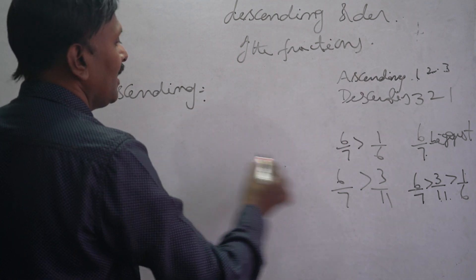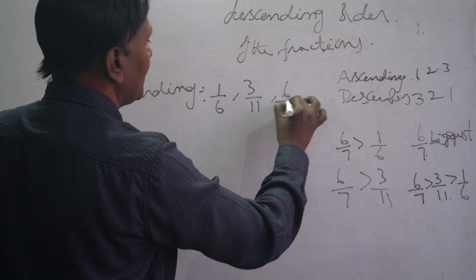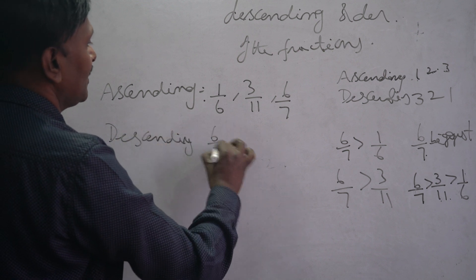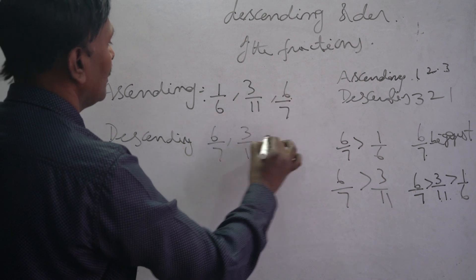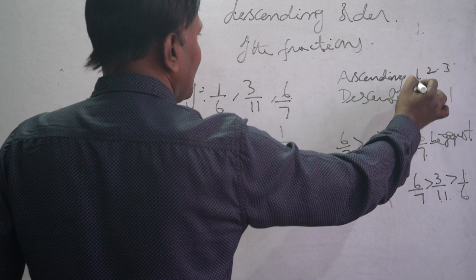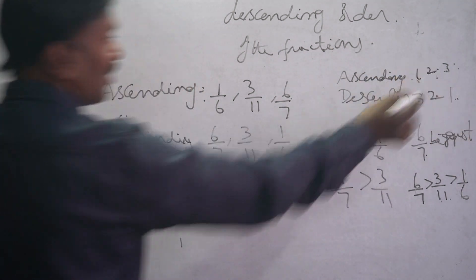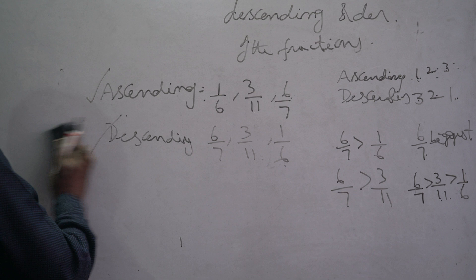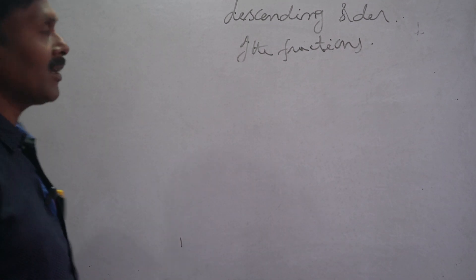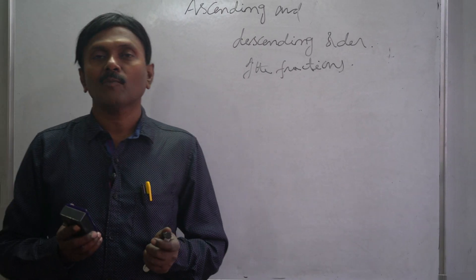Now we write the ascending and descending order. Ascending order (low to high): 1/6, 3/11, 6/7. Descending order (high to low): 6/7, 3/11, 1/6. Ascending means from least value to highest value; descending means from highest value to lowest value. With cross multiplication, you can find the biggest and smallest among three fractions and arrange them in ascending or descending order.